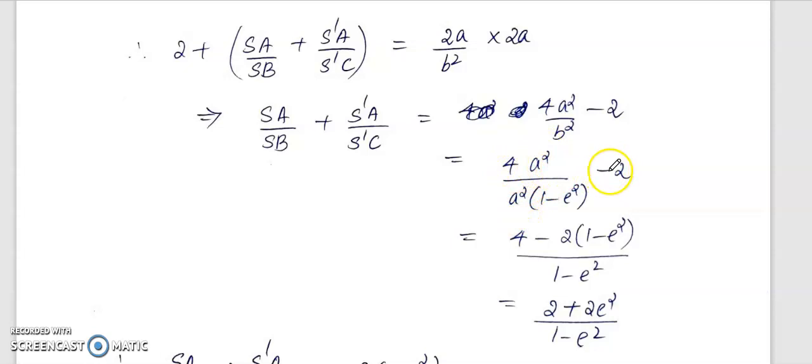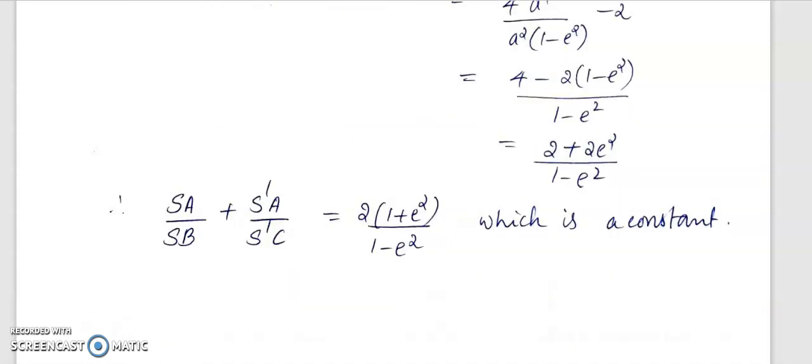You will get 4 minus 2 into 1 minus e² by 1 minus e², so that will be equal to 2 plus 2e² by 1 minus e², where e is the eccentricity and e is a constant. Therefore 2 into 1 plus e² by 1 minus e² is a constant.